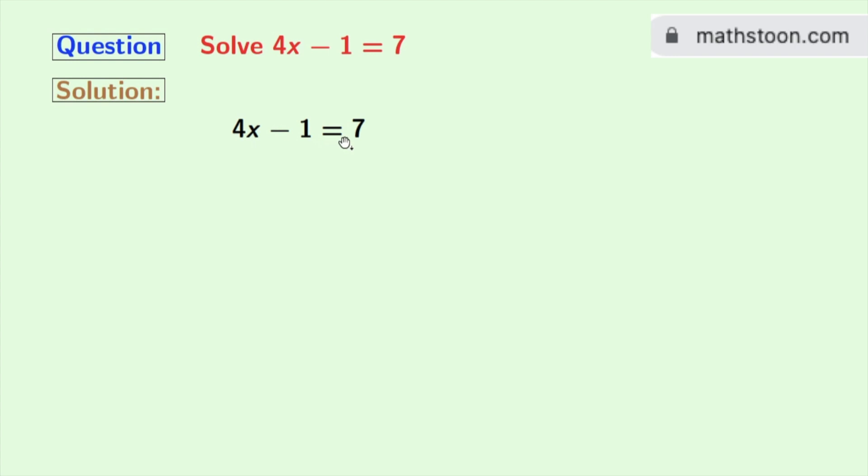This is our given linear equation. See that we have negative 1 in the left hand side. So to separate the variable x, we need to add 1 to both sides.